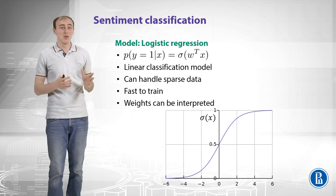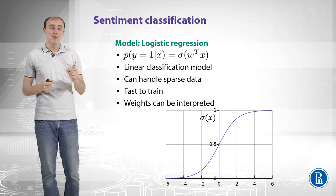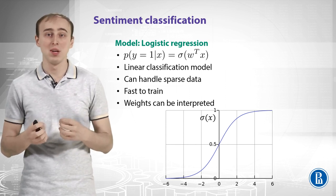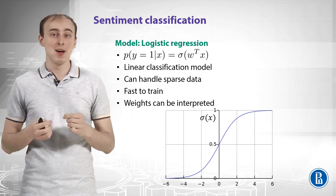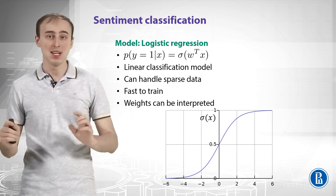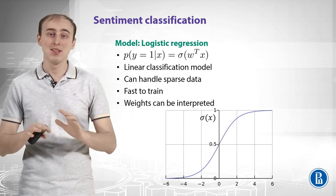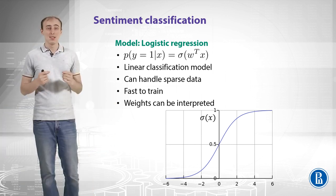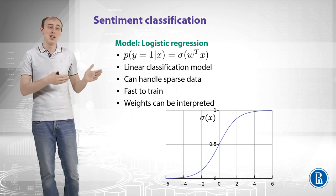The model that is usable for these features is logistic regression, which works as follows. It tries to predict the probability of a review being a positive one given the features for that particular review. The features are the vector of TF-IDF values. You find a weight for every feature of the bag-of-words representation, multiply each TF-IDF value by that weight, sum all of those values, and pass the result through a sigmoid activation function — that's how you get logistic regression. It is a linear classification model, and since it's linear, it can handle sparse data.